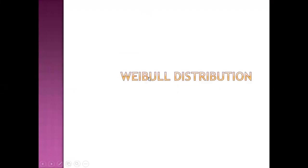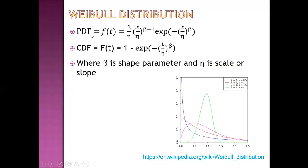The probability density function of Weibull distribution is given by a specific formula, and cumulative density function by another formula, where beta is the shape parameter and eta is the scale parameter. If beta is less than 1, there is reduced hazard over time. If beta equals 1, there is constant hazard, similar to exponential distribution. If beta is between 4 and 5, it resembles a normal distribution.